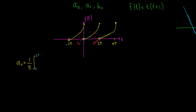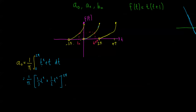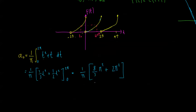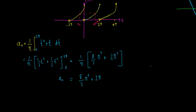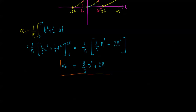So A₀ is equal to 1 on π times the integral from 0 to 2π of f of t dt, and f of t is t squared plus t, so it's the integral of t squared plus t dt. Integrating: 1 on π times a third t cubed plus a half t squared from 0 to 2π, which equals 1 on π times 8 on 3 π³ plus 4π² on 2, giving 8 on 3 π² plus 2π. So that's my A₀.